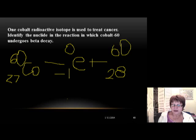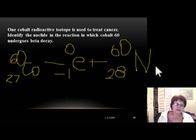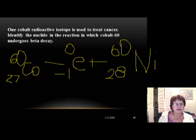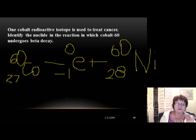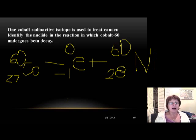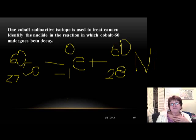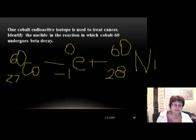We look up element 28, and that is nickel. So when this process happens, cobalt turns into nickel by beta decay. You can now say you've mastered nuclear equations — most people have no idea what a nuclear equation is, but now you do.